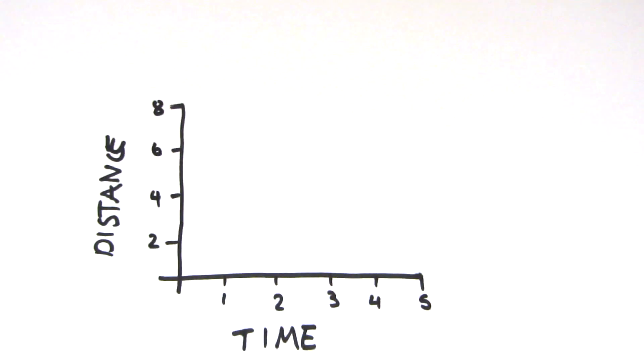This is where you have distance on the y-axis and time on the x. If we mark this as the starting point and start walking at a steady speed of 2 meters per second, then we can plot this on the graph and draw a straight line between the points.